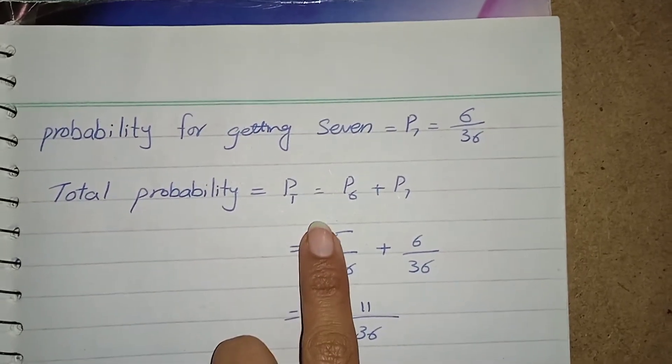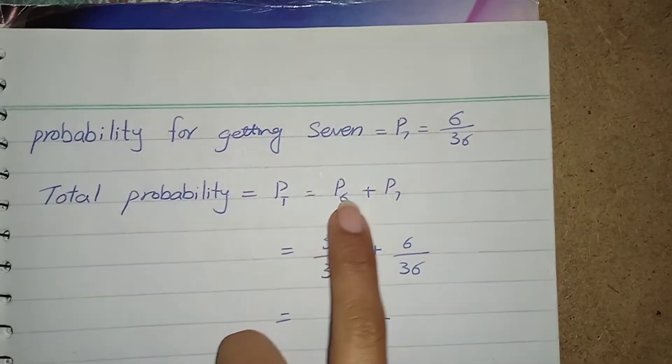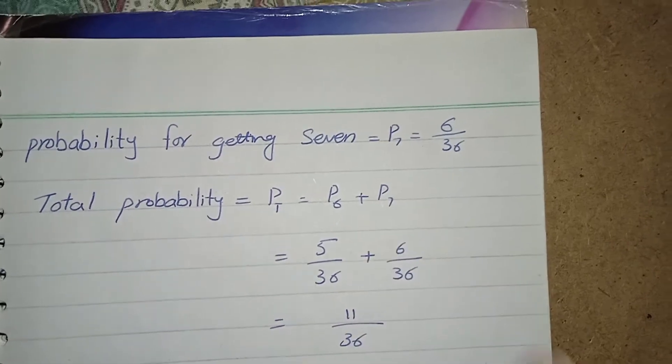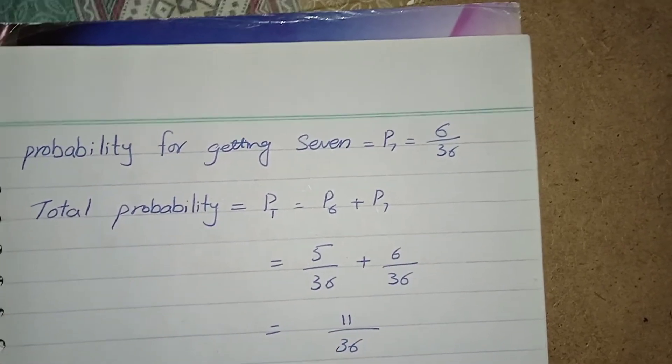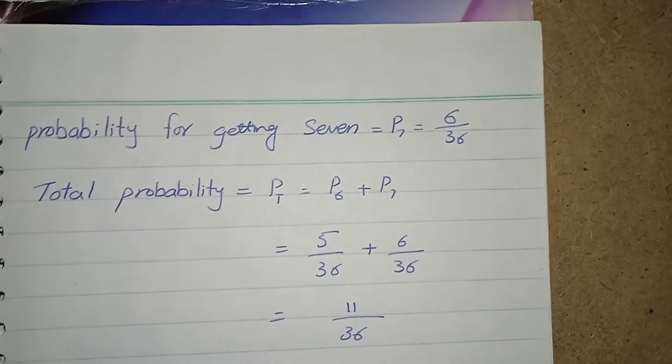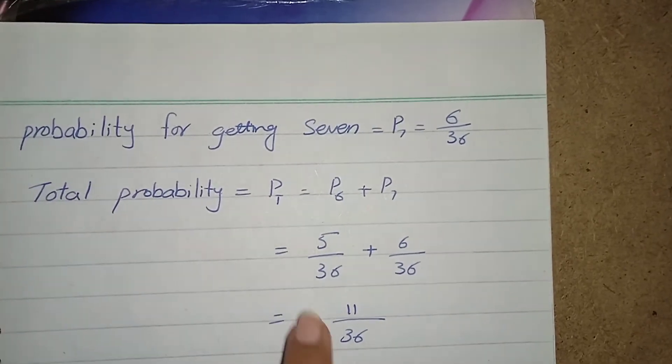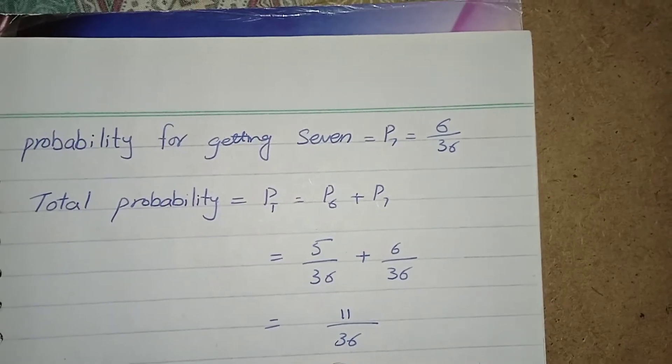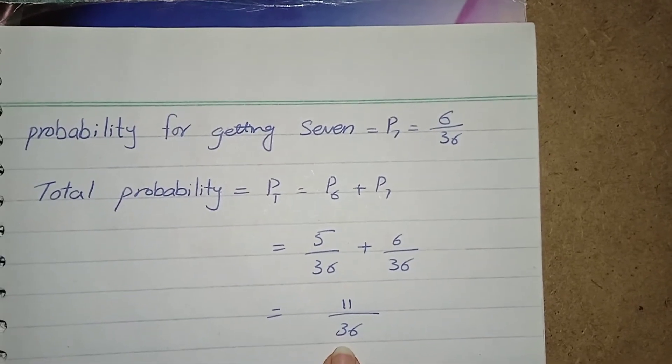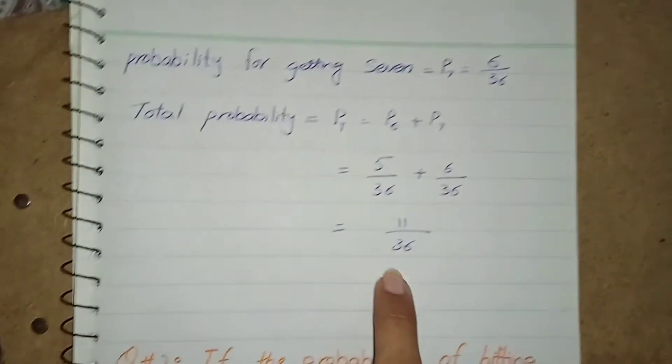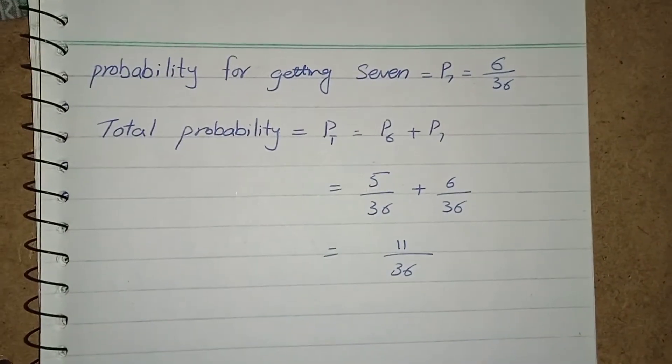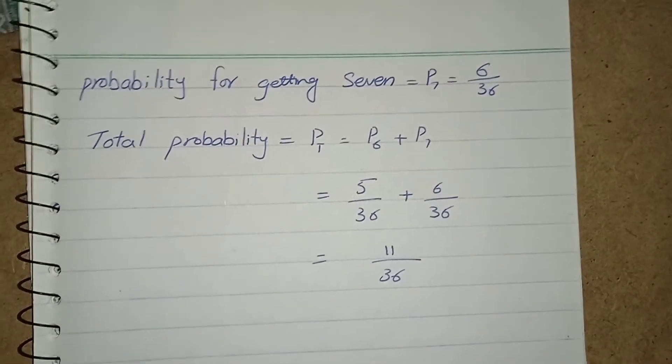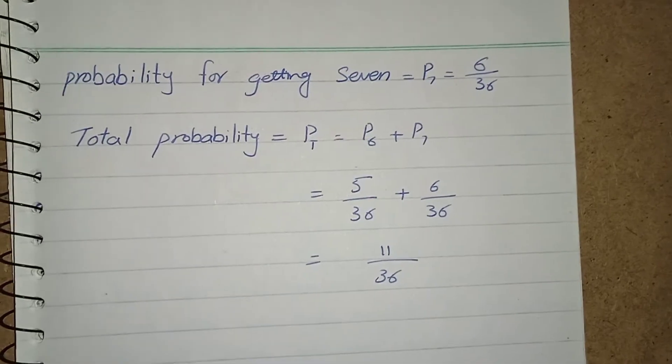As I did in this case I add the probability of getting 6 and getting 7 to find the actual probability of these events, which is equal to 5 over 36 plus 6 over 36. And by taking the LCM and adding them it is 11 over 36. This is the probability of actually getting 6 or 7 when you throw 2 dice.